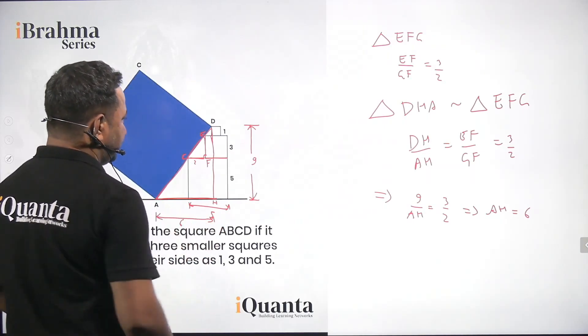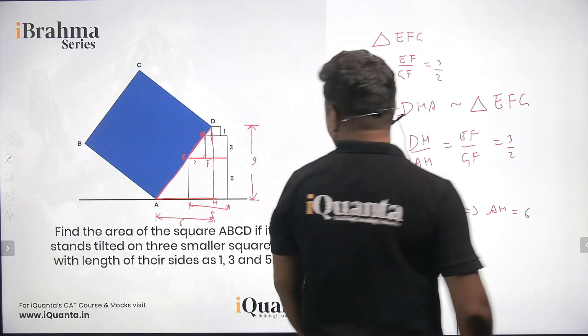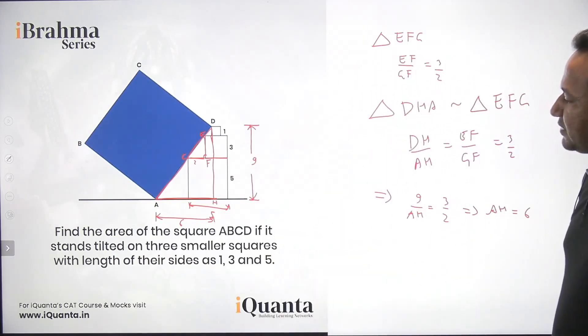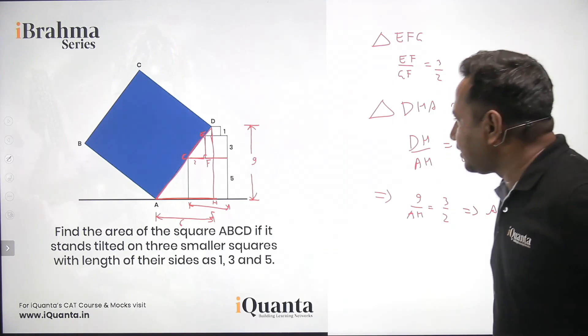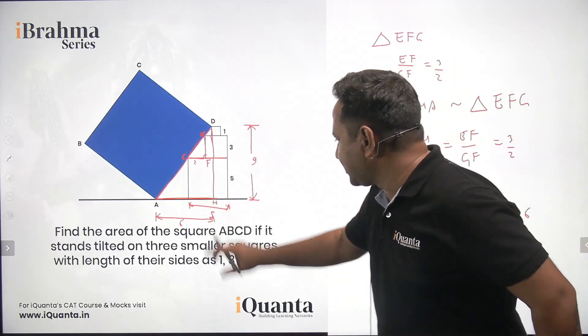Now, so now we can calculate the value of AD as well. Because DH is known as 9 and AH is known as 6.